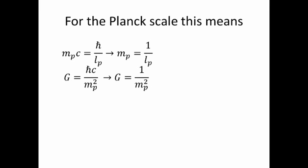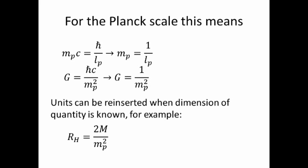It is important to note that we can always reinsert the units when the dimension of the quantity is known. For example consider the Schwarzschild radius of a black hole. In natural units it's 2m over m_p squared. Putting h bar and c back in we can convert it into its normal form.